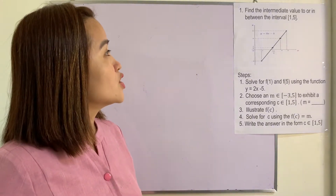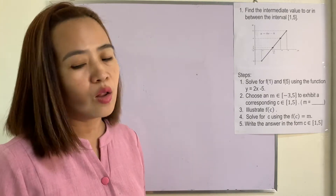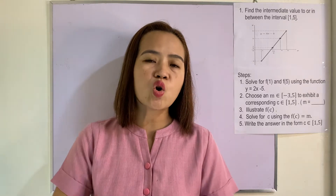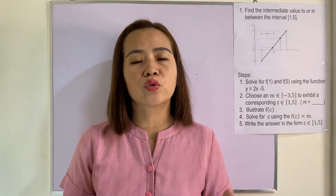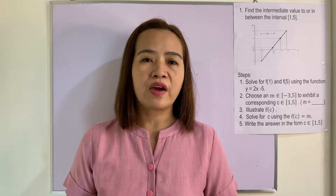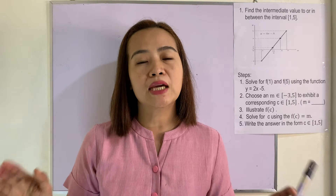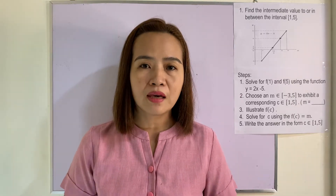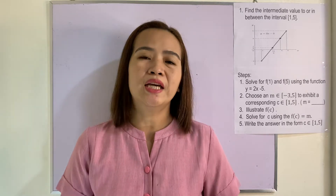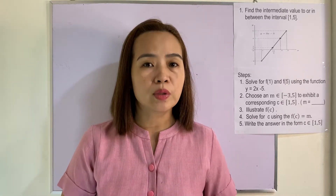Find the intermediate value 2, or in between the interval [1, 5]. What is this intermediate value? There is a so-called Intermediate Value Theorem which says that a function f(x) is found to be continuous at a given interval [a, b] and will take value 2, or in between f(a) and f(b). What do we mean by that?